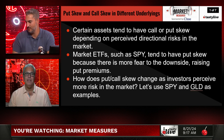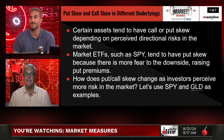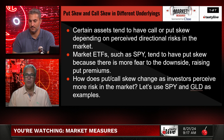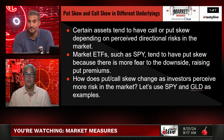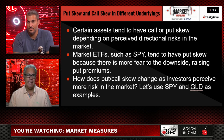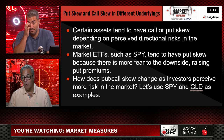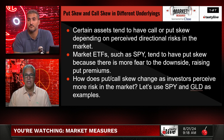This Market Measure, sponsored by the CBOE: put skew and call skew in different underlyings. Certain assets tend to have call or put skew depending on perceived directional risk in the market. I'd say perceived directional risk is accurate, but it's really the velocity of the move in that direction. Market ETFs such as SPY tend to have put skew, because there is more fear to the downside, raising put premium.